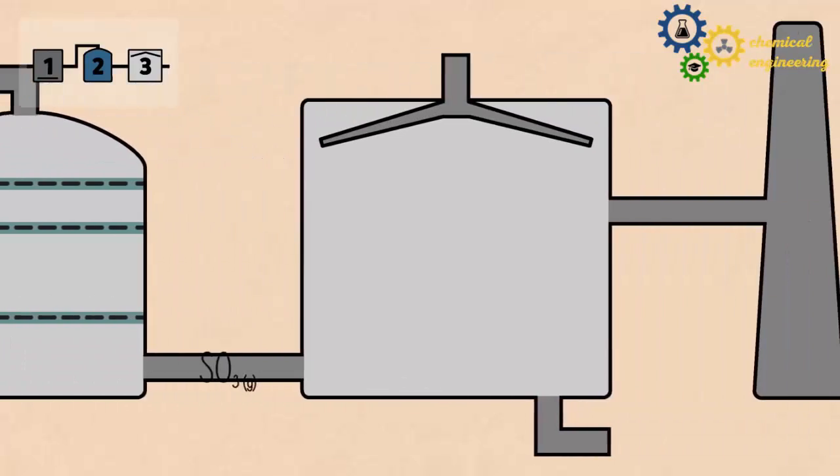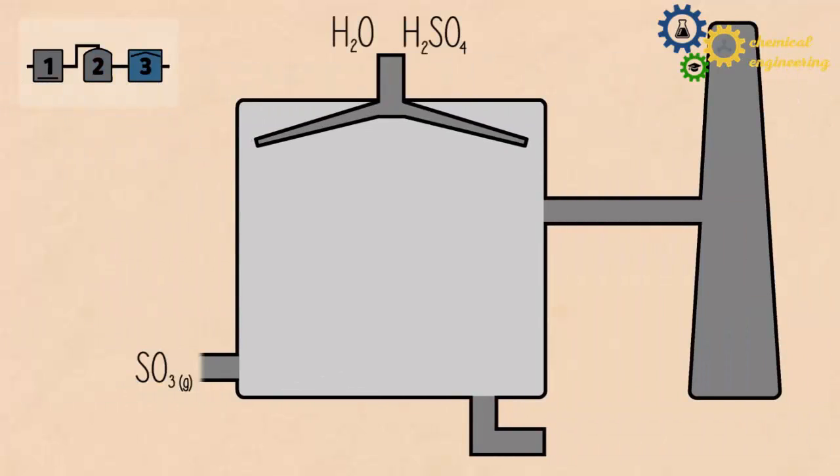Finally, in stage 3, sulphur trioxide is converted into a very concentrated sulphuric acid, and the equation is shown now.